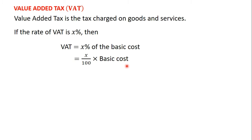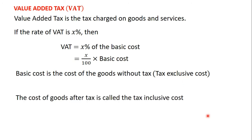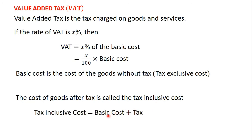Now, what is the basic cost? The basic cost is the cost of the goods without tax. The cost of an item without tax is known as the basic cost, or the tax-exclusive cost. The cost of an item after tax is known as the tax-inclusive cost, which equals the basic cost plus tax.